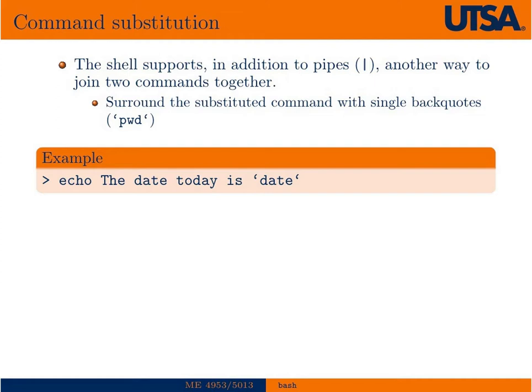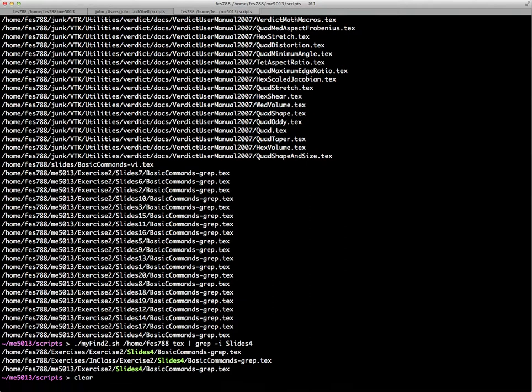So something we haven't talked about is we've talked about piping the output of one command into another, but there's another way to join two commands together, and that's with these single back quotes. So the typesetting here in LaTeX doesn't show up the way it does in the Bash shell, but it should look something like that. So I'll go over to the shell and give you an example of that. So we know the command echo just echoes back to the screen.